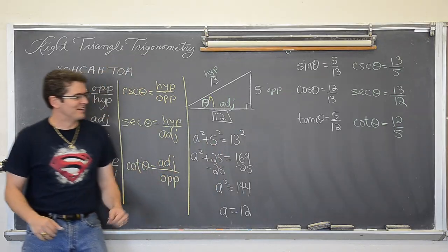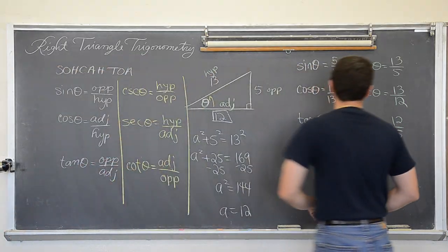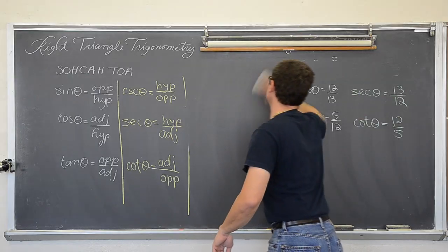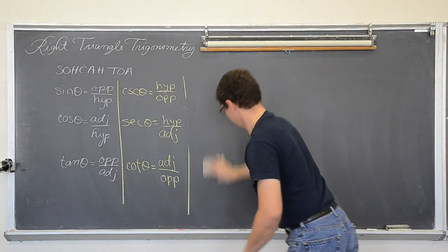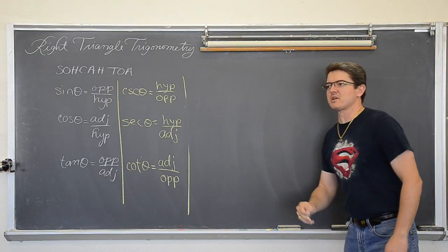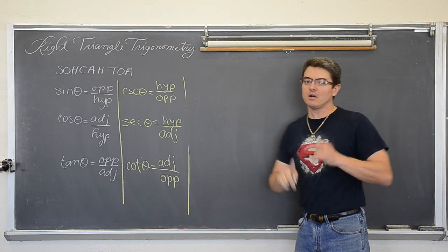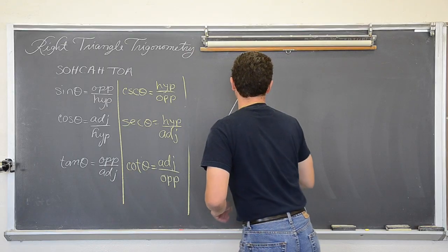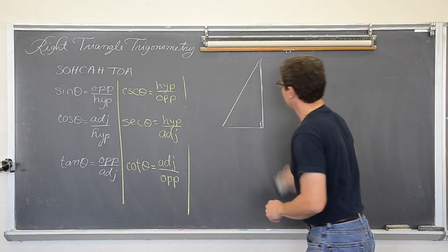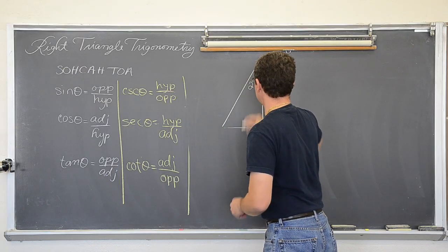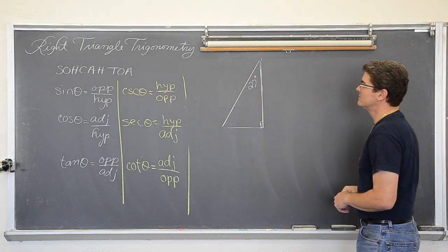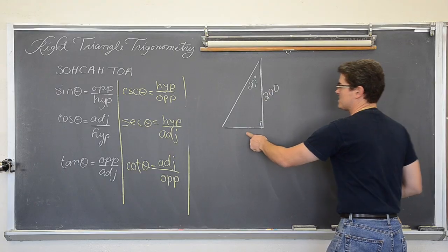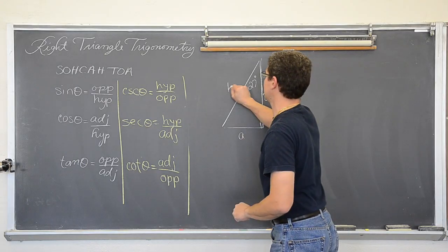Alright, BAM! Moving on. Finding the six trig functions from the sides of a right triangle. The next example is going to be finding the missing sides of a right triangle where we only know one side and one angle. Here is a right triangle with an angle of 27 degrees and a side length of 200. We are going to look for the side opposite 27 degrees, which is a, and the hypotenuse, which we have marked as b.